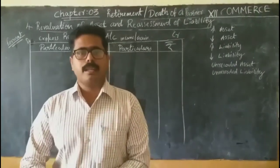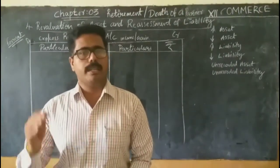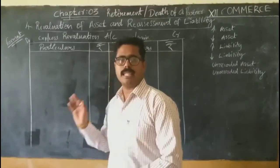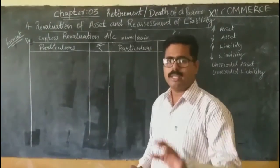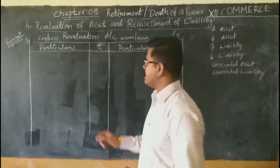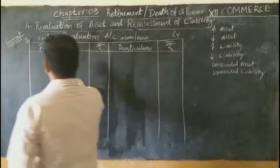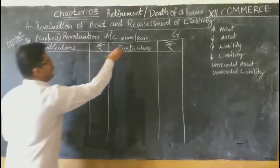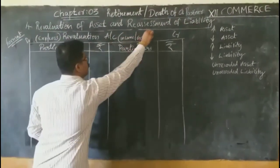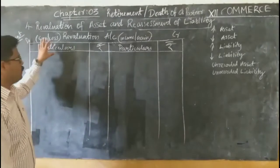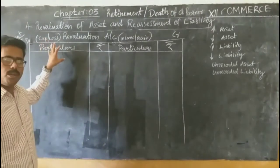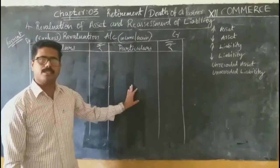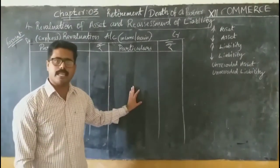The revaluation account is a nominal account in nature. The rule for a nominal account is: debit all expenses and losses, credit all incomes and gains. So on the debit side we mention all expenses and losses, and on the credit side we mention all incomes and gains.